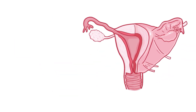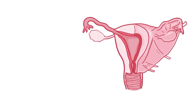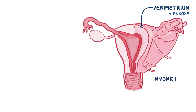The uterus consists of three layers: an outer thin layer called the parametrium or the serosa, a middle smooth muscle layer called the myometrium, and the innermost layer, the endometrium.